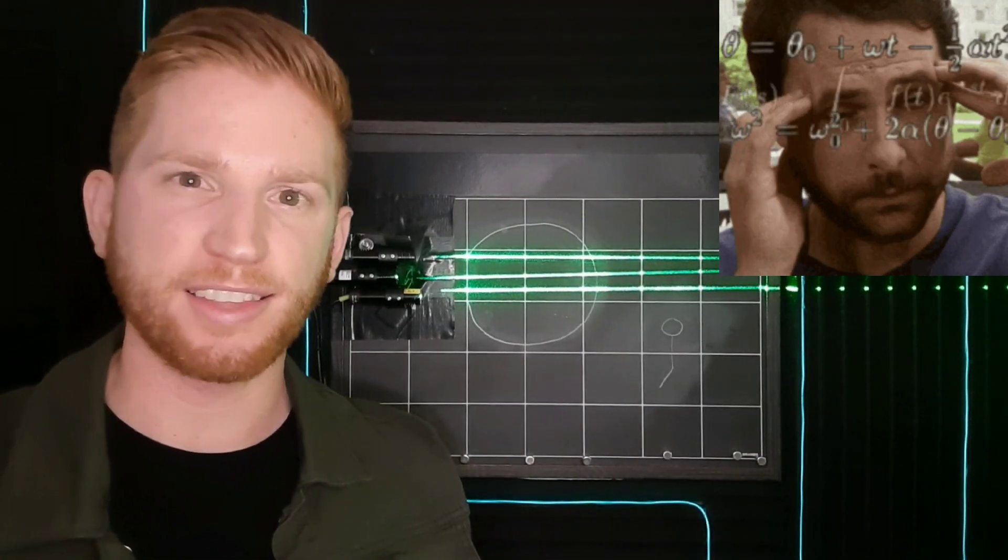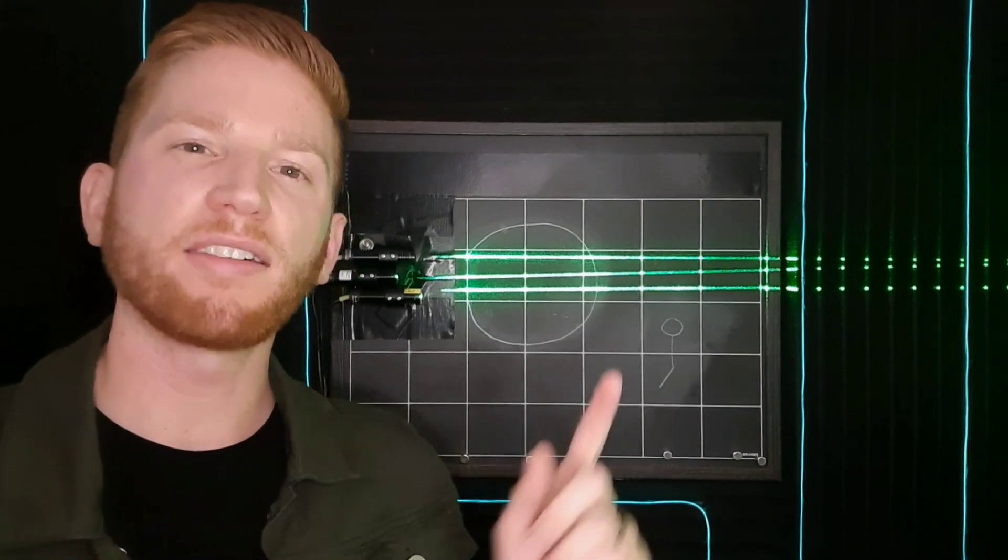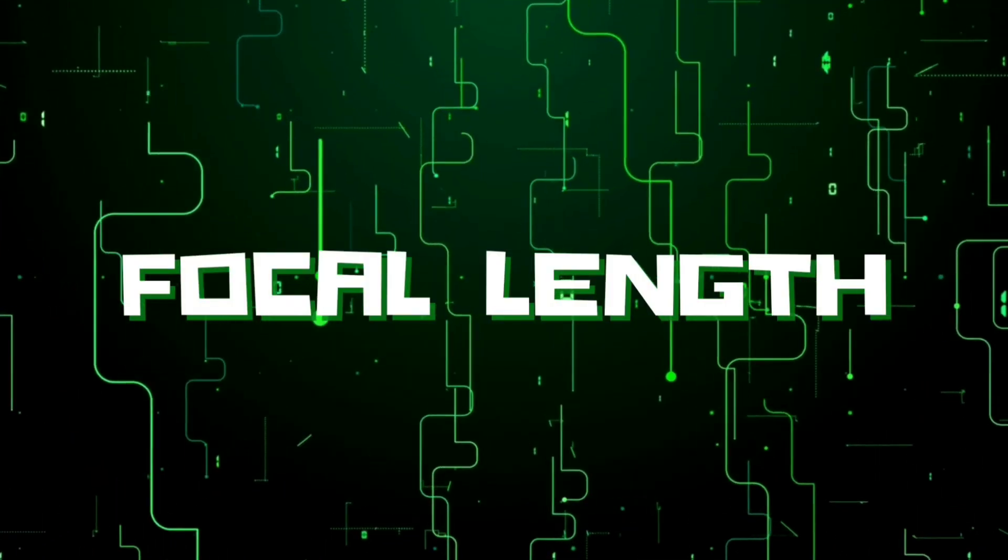So now you understand the difference between positive and negative lenses, but what does the number itself for SPH mean? That describes the power of your lens in diopters, and basically higher number means more powerful lens that's bending the light more. You probably don't understand what a diopter means though, right? To explain that, I'll explain something called the focal length of a lens.